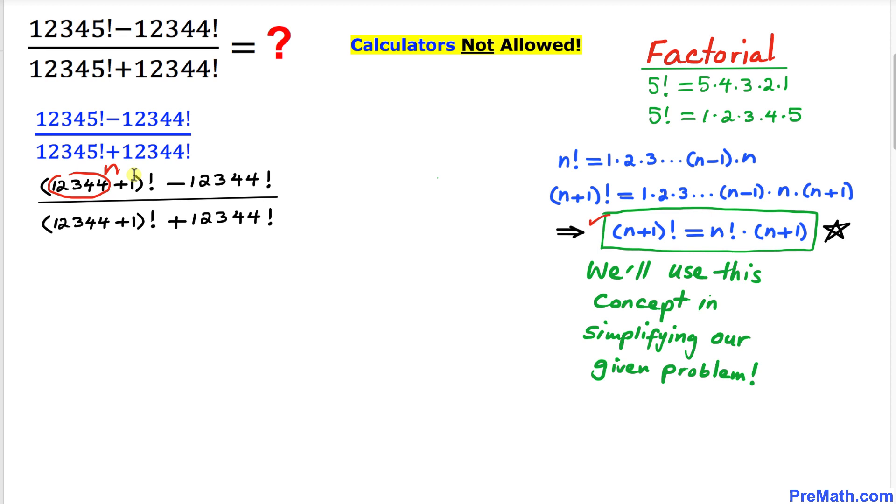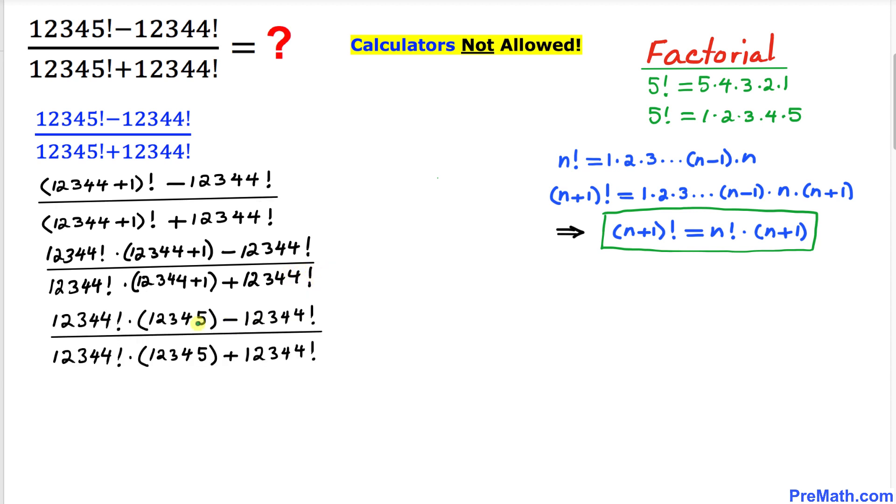This could be written as 12,344 factorial times 12,344 plus 1, minus 12,344 factorial, and then in the denominator, 12,344 factorial times 12,344 plus 1, plus 12,344 factorial. In this next step everything is the same except I have added these numbers as you can see.